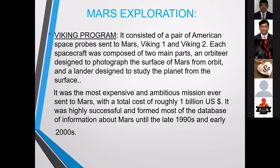Mars Exploration is a mission sent by America, consisting of two parts: Viking 1 and Viking 2. One is used for capturing pixel images of environments and terrain. We can observe the conditions on Mars through photographic imaging. It is the most expensive and ambitious mission ever sent to Mars, with a total cost of roughly 1 billion US dollars. It was highly successful and formed most of the database of information about Mars until the 1990s and early 2000s.